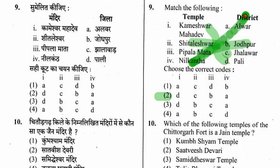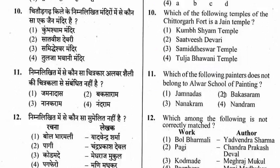Question 10: Which of the following temples of Chittorgarh fort is a Jain temple? Options are Kumbh Shyam temple, Satvish Devari, Samiddheshwar Mandir, and Tulja Bhawani temple. The right option is option 2 — Satvish Devari.